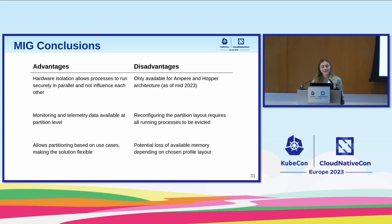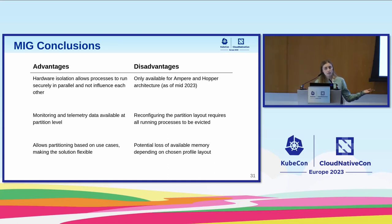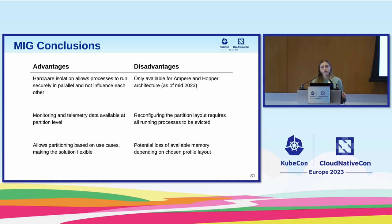MIG is cool. We have hardware isolation, monitoring data, and are very flexible based on our use cases. But MIG comes with a price — not a metaphorical one. The GPUs are very expensive. You need Ampere or Hopper architecture, which are server-side GPUs. If you're not careful, you might lose compute or memory. And you need to evict all running processes in order to change the MIG layout, which is something to keep in mind.